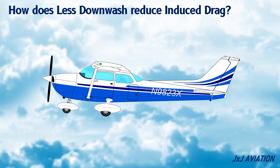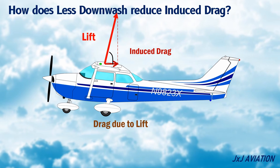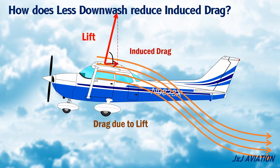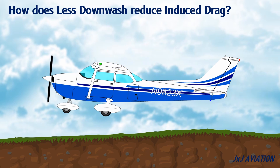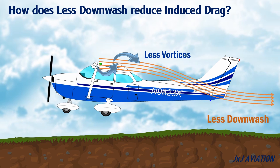How does less downwash reduce induced drag? Induced drag refers to the drag created due to lift, so depending on the tilt of the lift vector, the induced drag will change. The lift created on the wing is always perpendicular to the downwash. If the downwash is reduced, the lift vector will become more straight. This causes a reduction in the backward component of the lift vector, which is the induced drag. So when an aircraft is close to the ground, less vortices are created on the wings, resulting in less downwash behind the wings, which causes an increase in lift and a reduction in drag.